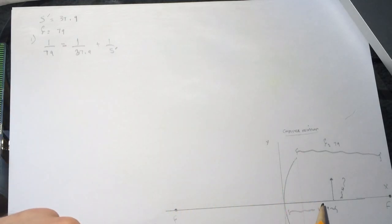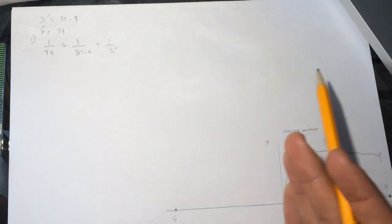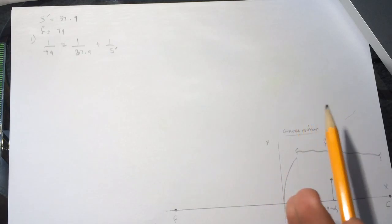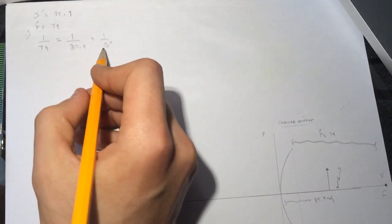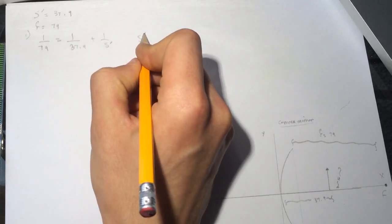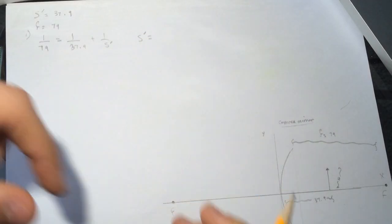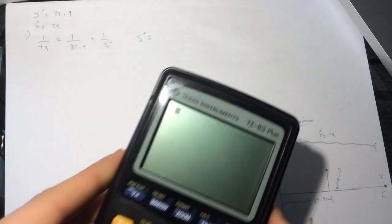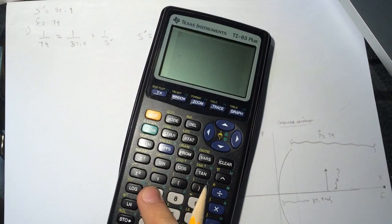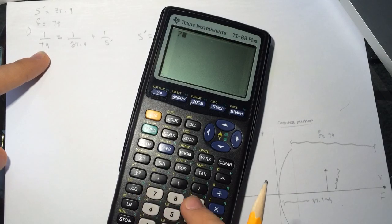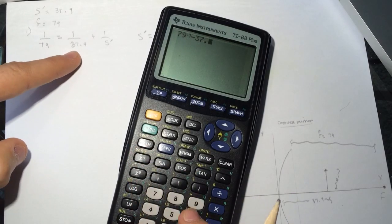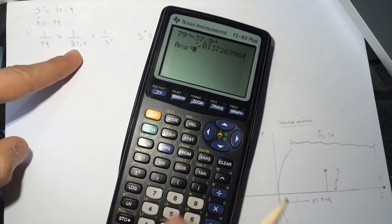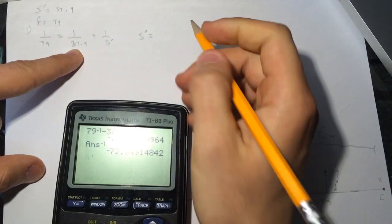And I'm using the right place for them on the x-axis. So I'll get for the S prime. Let's plug in the calculator. So when you take this to the other side, so 79 minus 37.9, then we get minus 72.